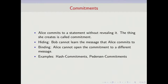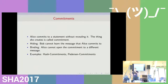The first one is commitments, which can be a very useful thing. Let's say Alice has some message that she wants to be able to prove at a later point to the public that she already knew it. She wants to compute something called a commitment that she can publish, but no one else should be able to extract any information from it. This is what we call the hiding property — it means that Bob cannot learn the message that Alice commits to.